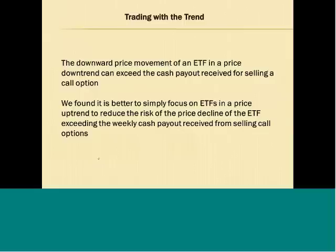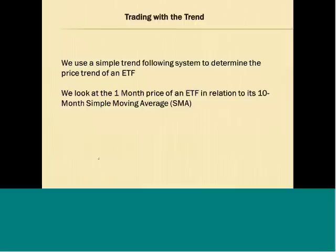We're looking for the ETF to remain flat or maybe up slightly, so we avoid ETFs in a price downtrend. There's no need to do that because there are plenty of ETFs in a price uptrend. We use a simple trend following system — we look at the one-month price of the ETF in relation to its 10-month simple moving average, which is a very common indicator.